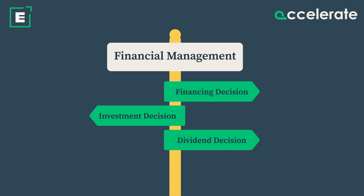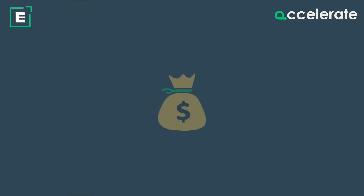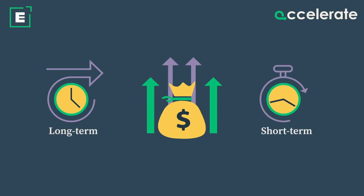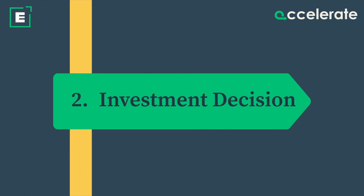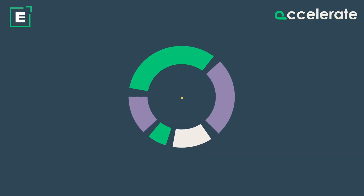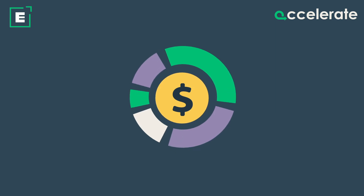Types of financial management. 1. Financing decision: Financing decision concerns raising funds for the company both from long-term as well as short-term sources. 2. Investment decision: Investment decision is the company's allocation of funds into a variety of investment opportunities.